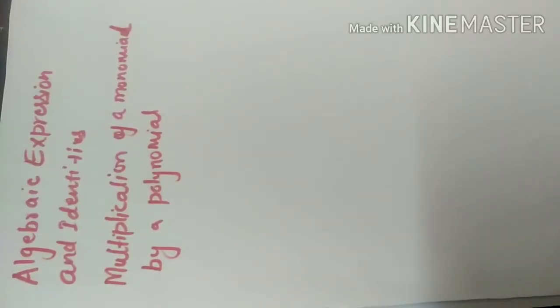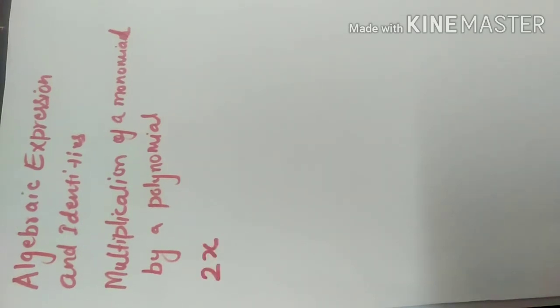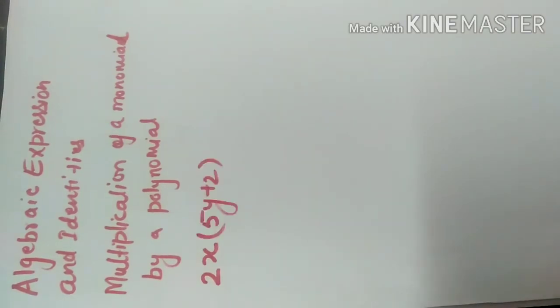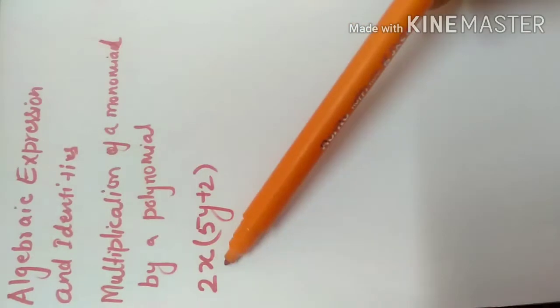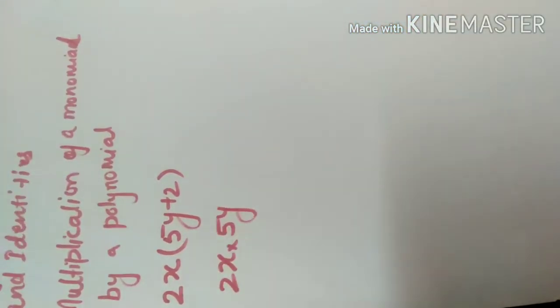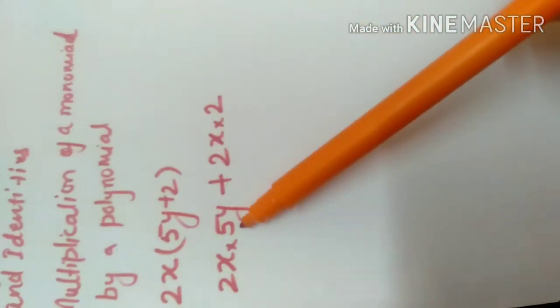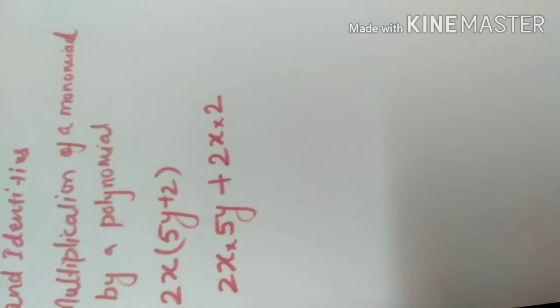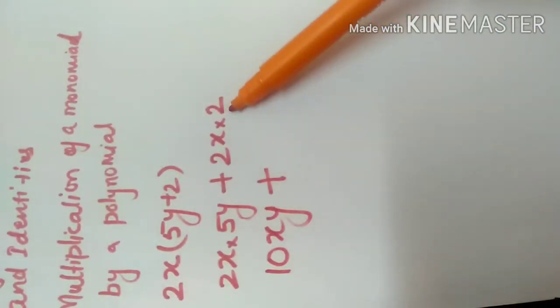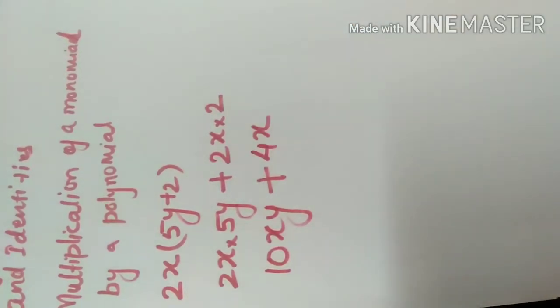Hello students. Today in this video we'll learn about the multiplication of a monomial by a polynomial. Let's see an example: monomial 2x multiplied to 5y plus 2. We will multiply by separating each term one by one. First, 2x is multiplied to 5y, giving 10xy, then 2x is multiplied to 2, giving 4x. So the result is 10xy plus 4x.